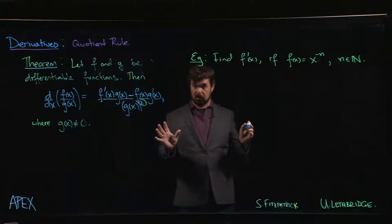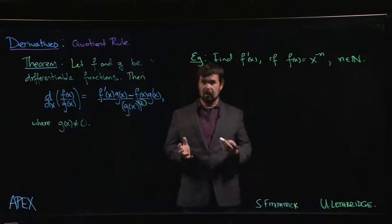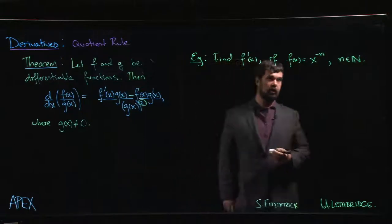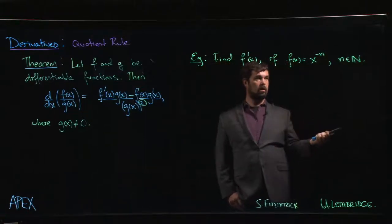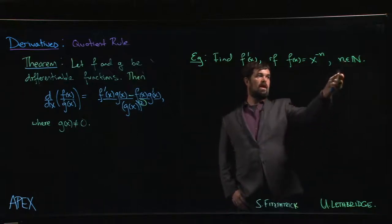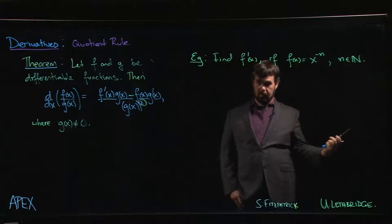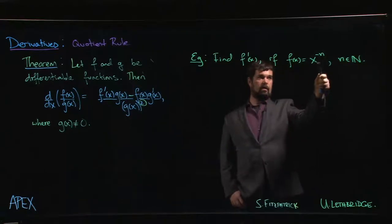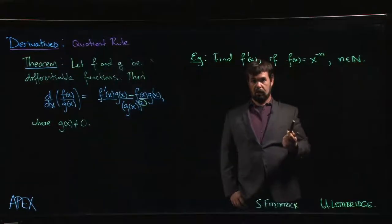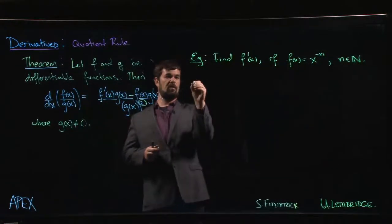Next we're going to extend the power rule, which so far we've only demonstrated for positive integers. If we have x to the power of some positive integer, we know what to do. Now if n is a positive integer, putting the minus sign out front will make it a negative integer. So let's see what happens when we calculate the derivative of a power function where the power is negative. First thing we notice...